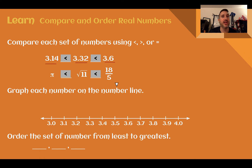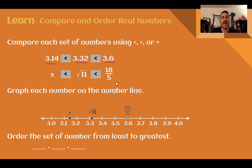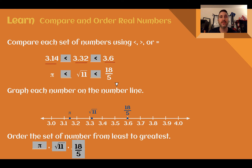If we want to show where they're located on the number line, we can graph them. So pi was at 3.14, which is approximately there. The square root of 11 was at 3.32, so just past 3.3. And then 18 fifths is exactly 3.6, so we would put it there. Overall, putting those numbers in order from least to greatest: pi was the smallest, then the square root of 11, then 18 fifths.